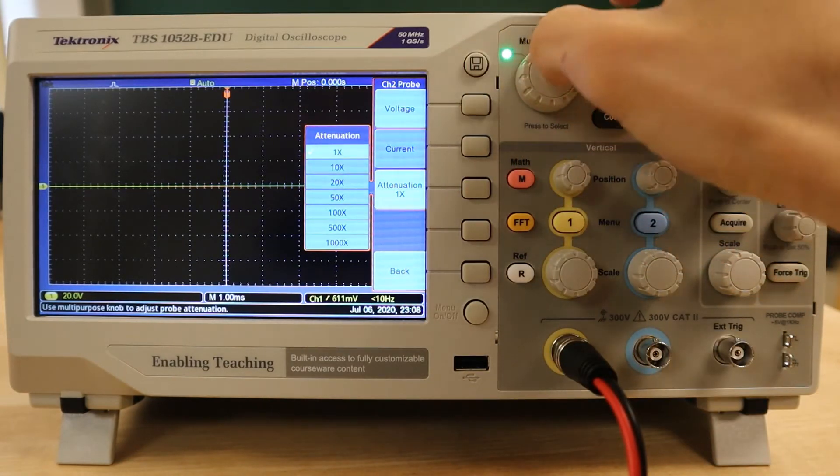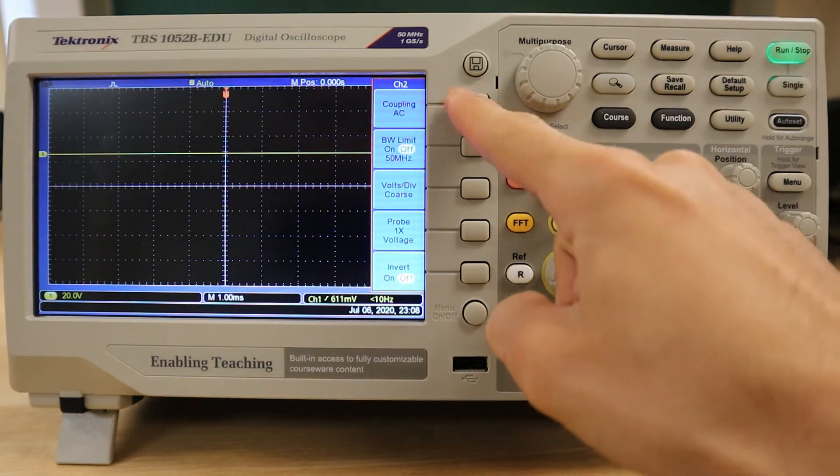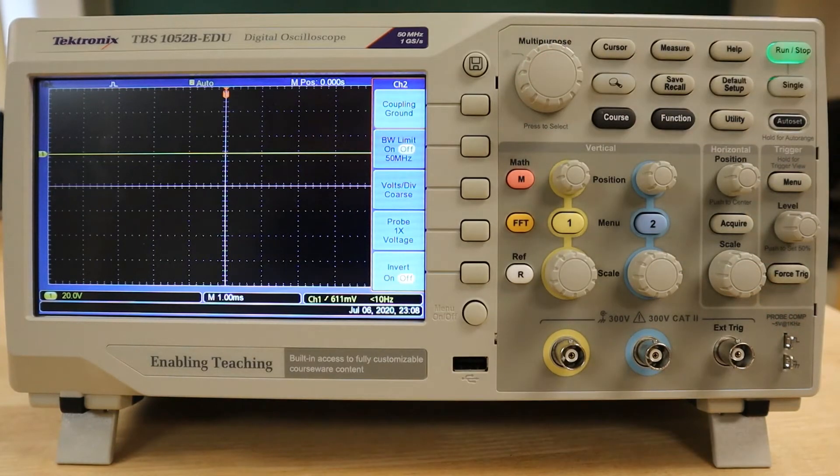Before making any measurements, we also want to make sure the trace is zeroed properly by changing the coupling to ground and adjusting the position of the trace to be aligned with the horizontal axis.